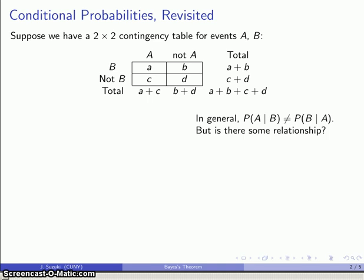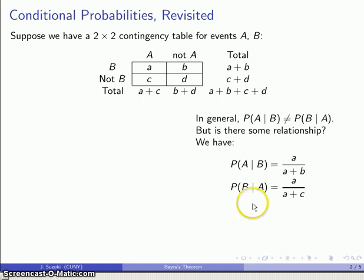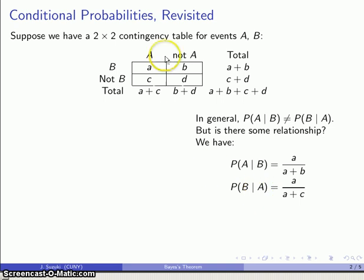Remember that in general, we cannot assume any relationship between the probability of A given that B has occurred and the probability that B occurs given that we know that A has occurred. But is there some relationship we can express between the two? The probability of A given B is A out of A plus B, and the probability of B given A is A out of A plus C. The fact that our numerators are actually the same number causes us to hope there is some useful relationship between the two probabilities.